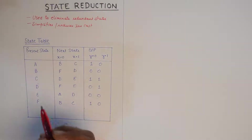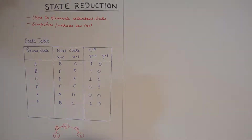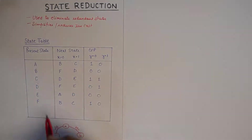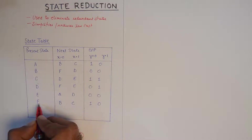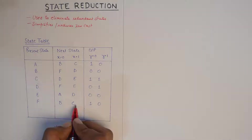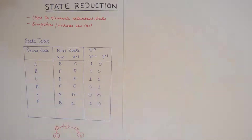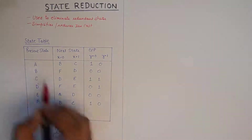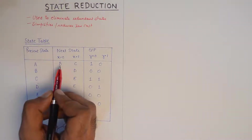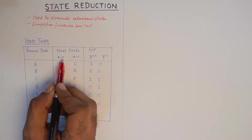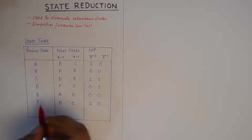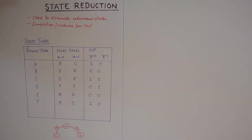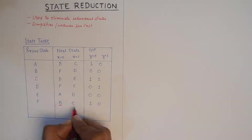The first technique we use in state reduction is: if all present states give the same next states and give the same output while producing the next state, they are redundant. Examining closely from the very bottom, state F takes you to next states B and C upon the application of input 0 and 1 respectively — and that is exactly what is happening with state A. So these two states are redundant.